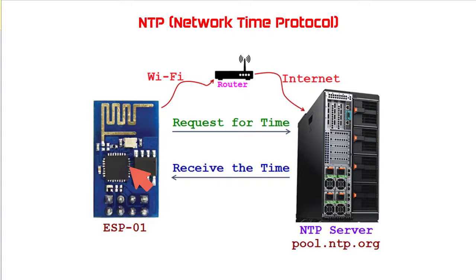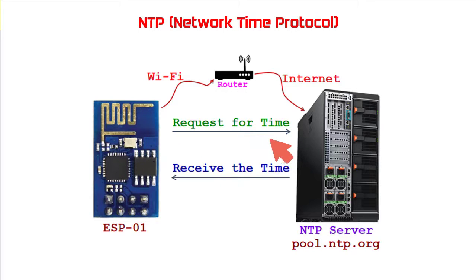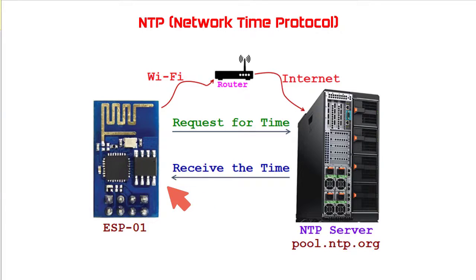The client device — here I am going to use ESP8266 ESP01 — connects to the server through the internet using the User Datagram Protocol. The client then transmits a request packet to the NTP server. In response, the NTP server sends a timestamp packet within a few milliseconds. This timestamp packet is in Coordinated Universal Time and contains multiple information like UNIX timestamp, accuracy, delay, and time zone. The client can then parse out current date and time values using libraries and programming code.